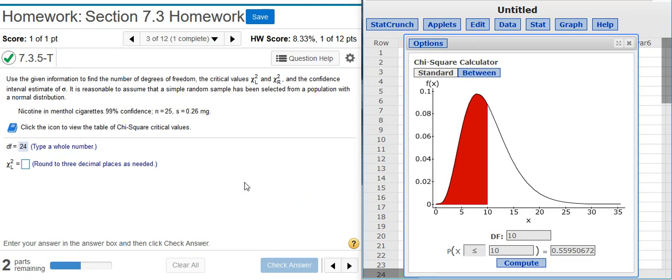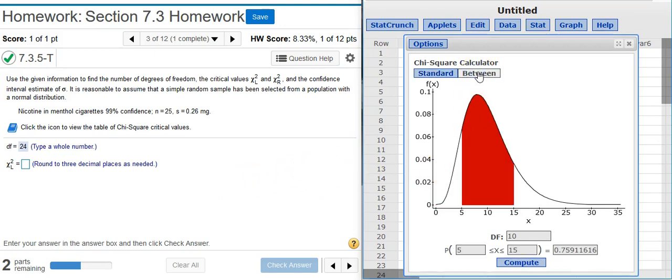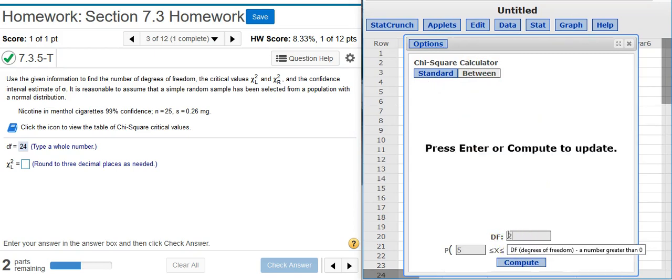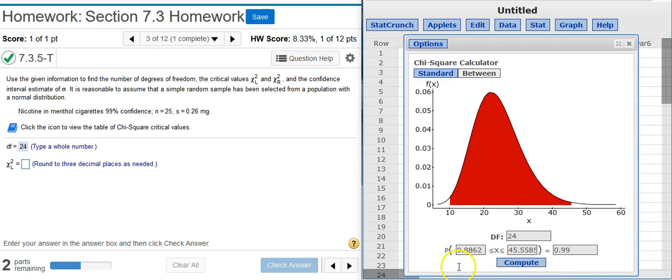There are two that we're looking for, so I'm going to use the between option. Degrees of freedom are what we calculated in the first part, that's 24. Here in these spaces are where our critical values are going to show up. What we need to put in here is the area in between the critical values, and that's the size of the confidence level, which in this case is 99%. So I'll put 99% in, press compute, and here we've got our two critical values.